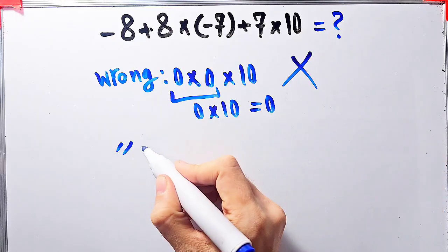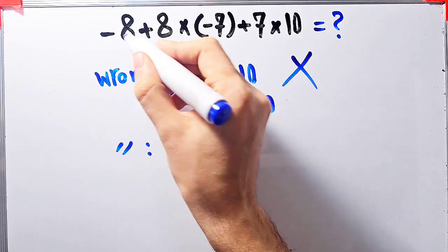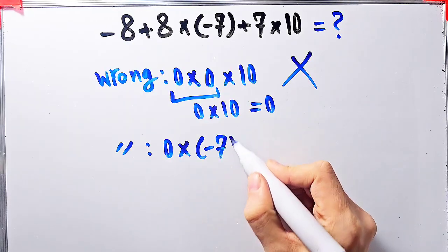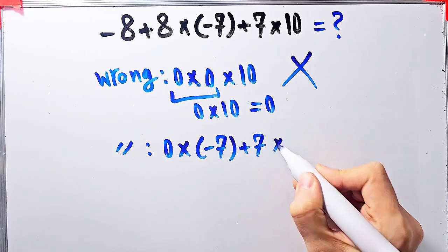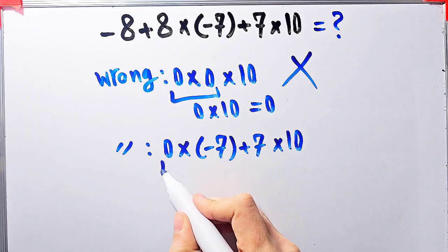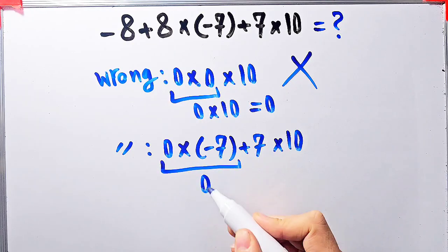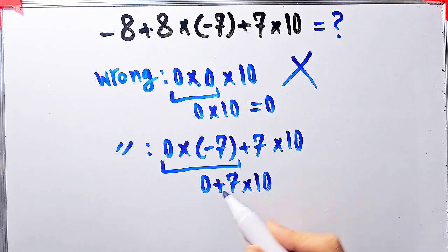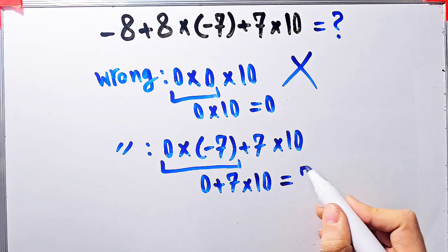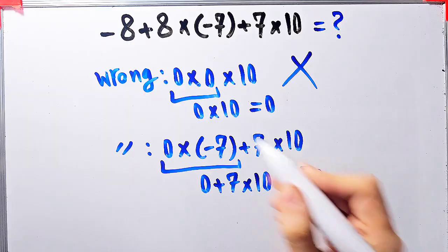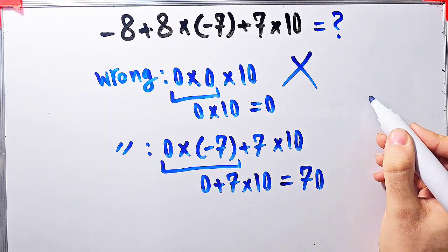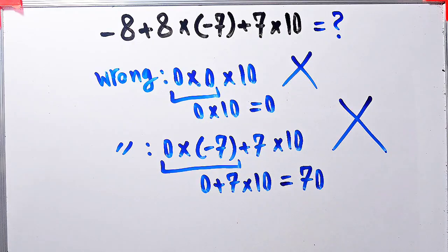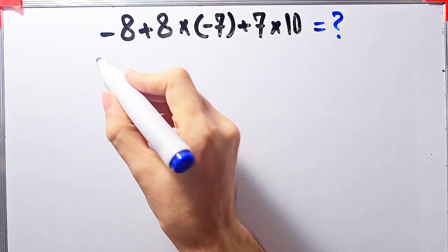Some people solve it like this: negative 8 plus 8 equals 0, then 0 times negative 7 plus 7, then times 10. They get 0 times negative 7 equals 0, then 0 plus 7 equals 7, and 7 times 10 equals 70. They say the final answer equals 70, but this answer is definitely wrong.